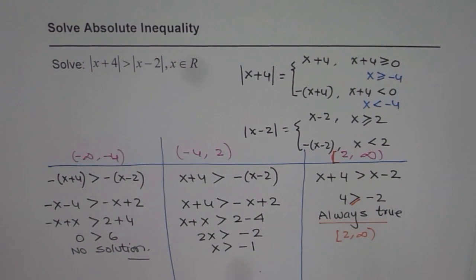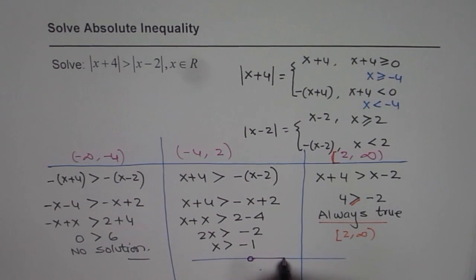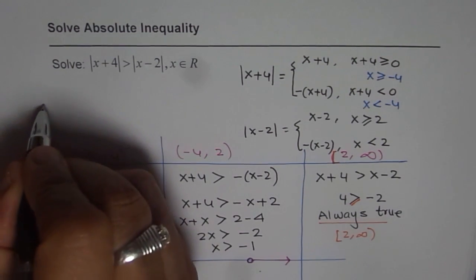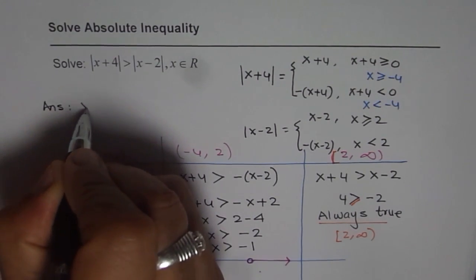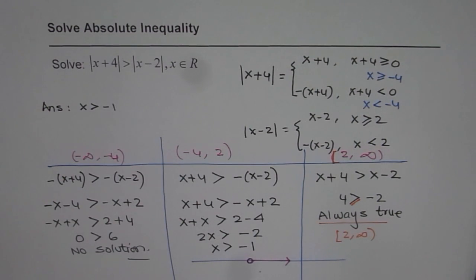The solution of this inequality is x greater than minus 1. On a number line, since it is a strict inequality we do not include minus 1, and everything to the right of minus 1 is a solution. The key takeaway is to rewrite absolute functions as combinations of linear functions and then solve each interval's inequality separately. Thank you and all the best.